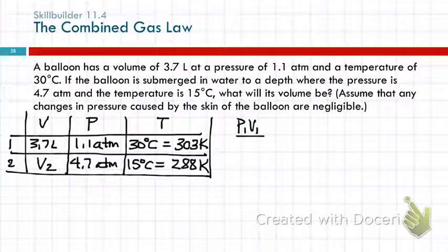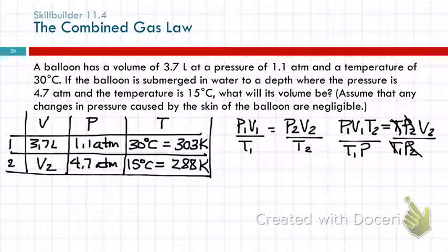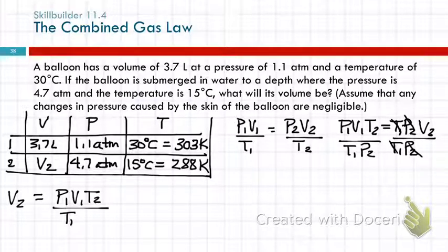P1 V1 over T1 equals P2 V2 over T2. Cross multiply. P1 V1 T2 equals T1 P2 V2. I want V2. So, I'm going to take this side, divide by T1 P2. Do the same thing to the other side. You've got to write. You've got to write this stuff down. It's just way too complicated to keep in your head. V2 then is equal to P1 V1 T2 over T1 P2.